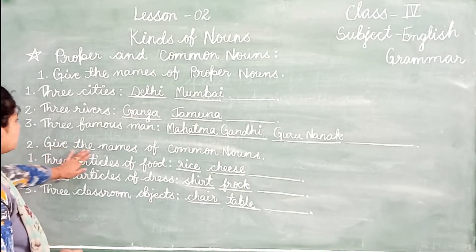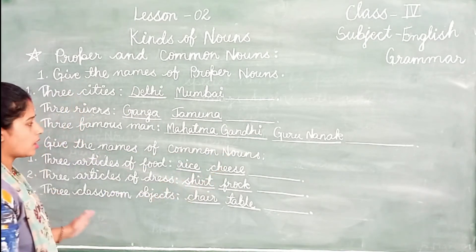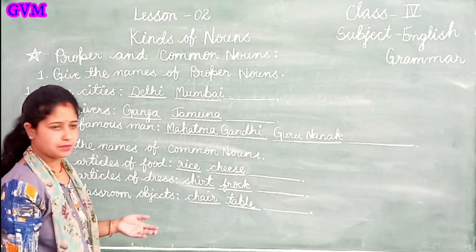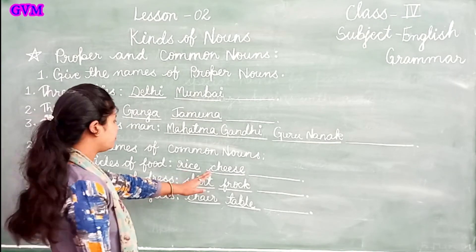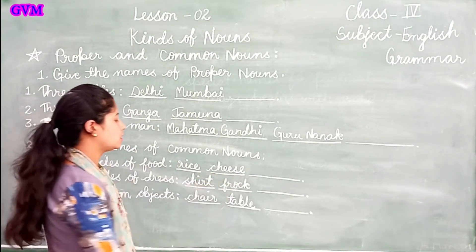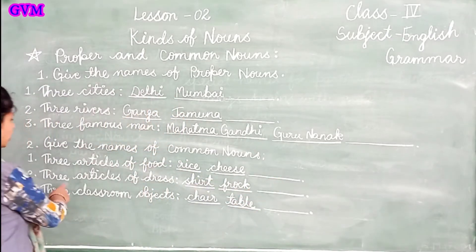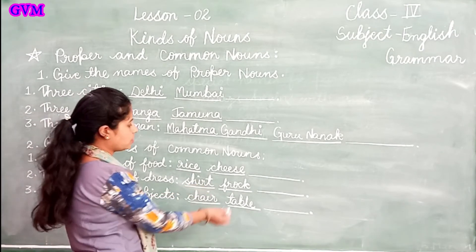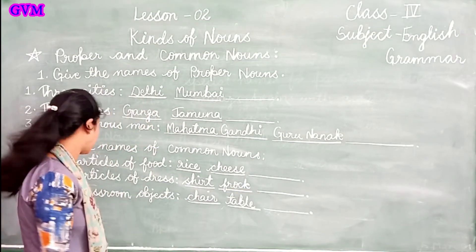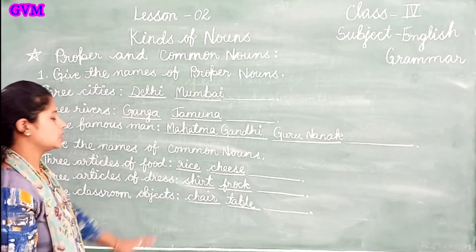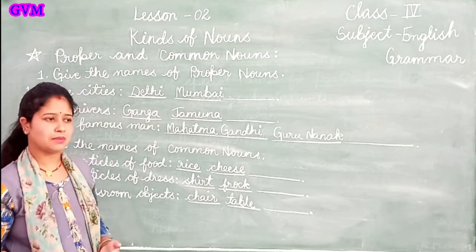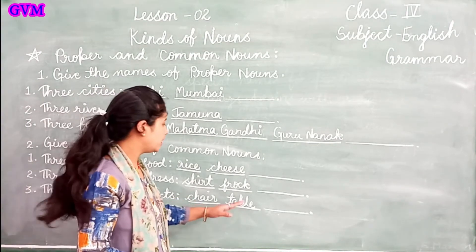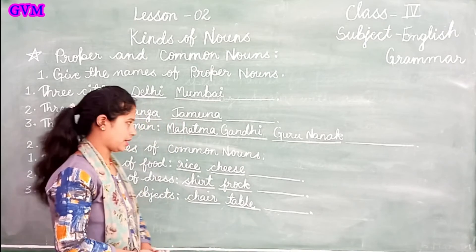Now give common noun examples: three articles of food — rice, cheese, and one more. Three articles of dress — shirt, frock, and one more. Three classroom objects — chair, table, and one more object you can see in the classroom.